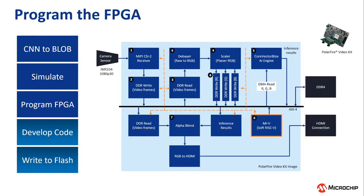The hardware design for the video kit is provided along with the VectorBlocks SDK. The design converts the kit into a smart camera with an HDMI output. The core VectorBlocks IP — the AI engine — receives planar RGB values of the video stream after pre-processing and outputs inference results.